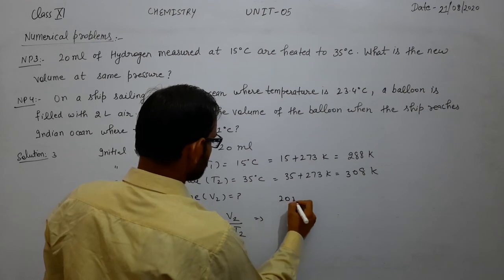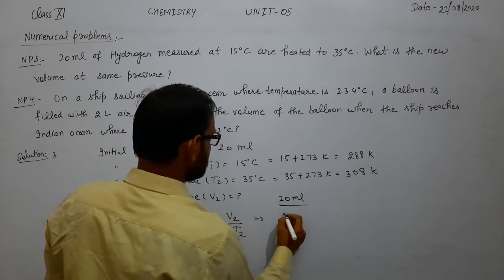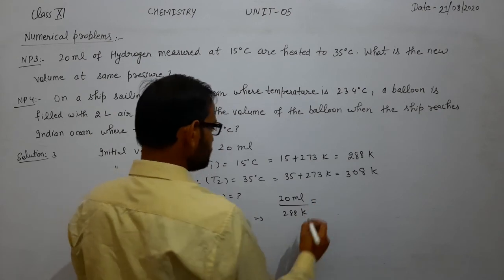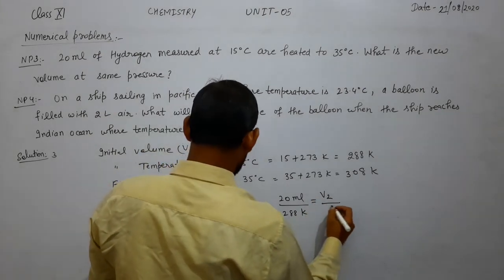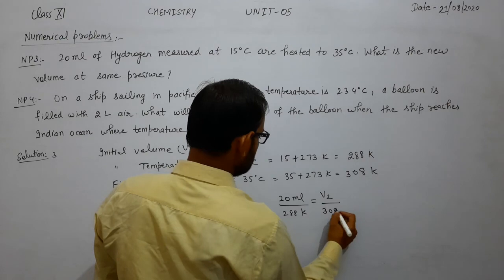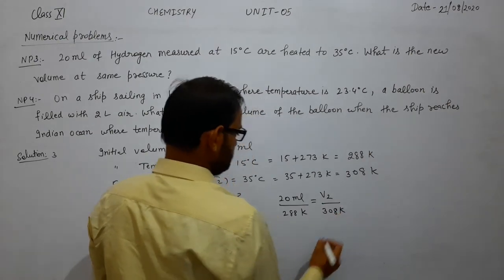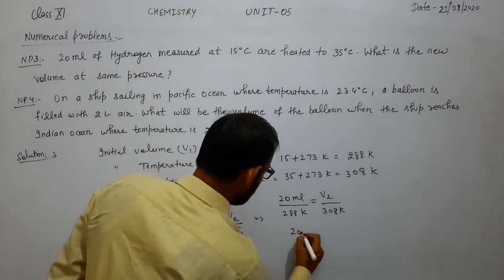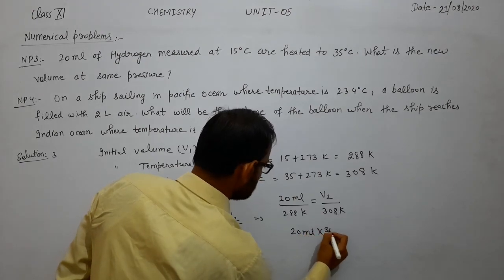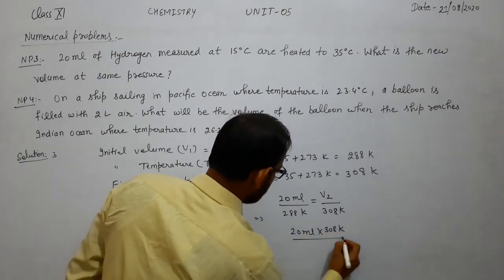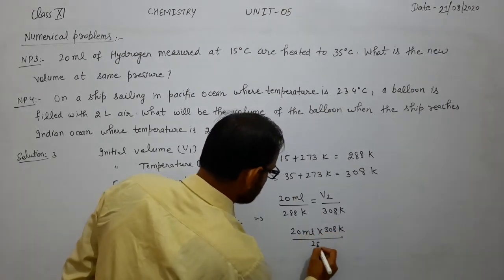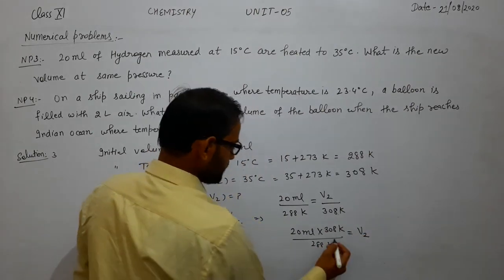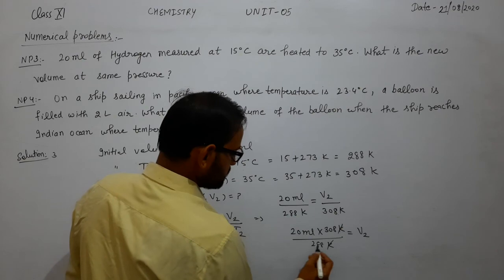Cross multiplying: V2 is equal to 20 ml × 308 Kelvin divided by 288 Kelvin. The Kelvin units cancel, and we solve the arithmetic to get the final volume V2.